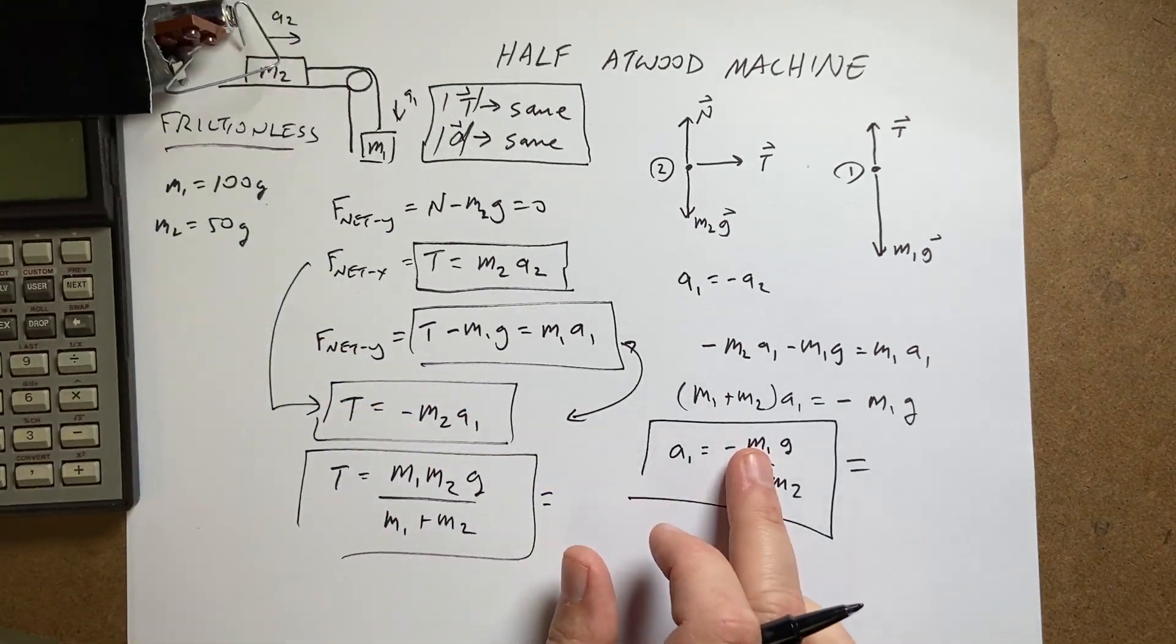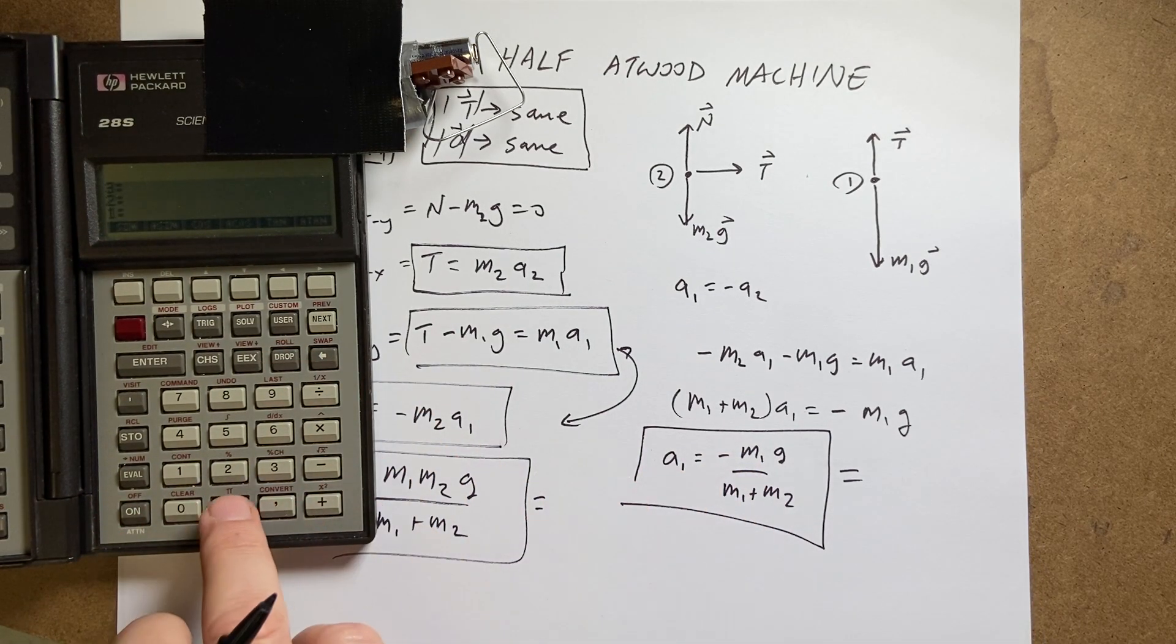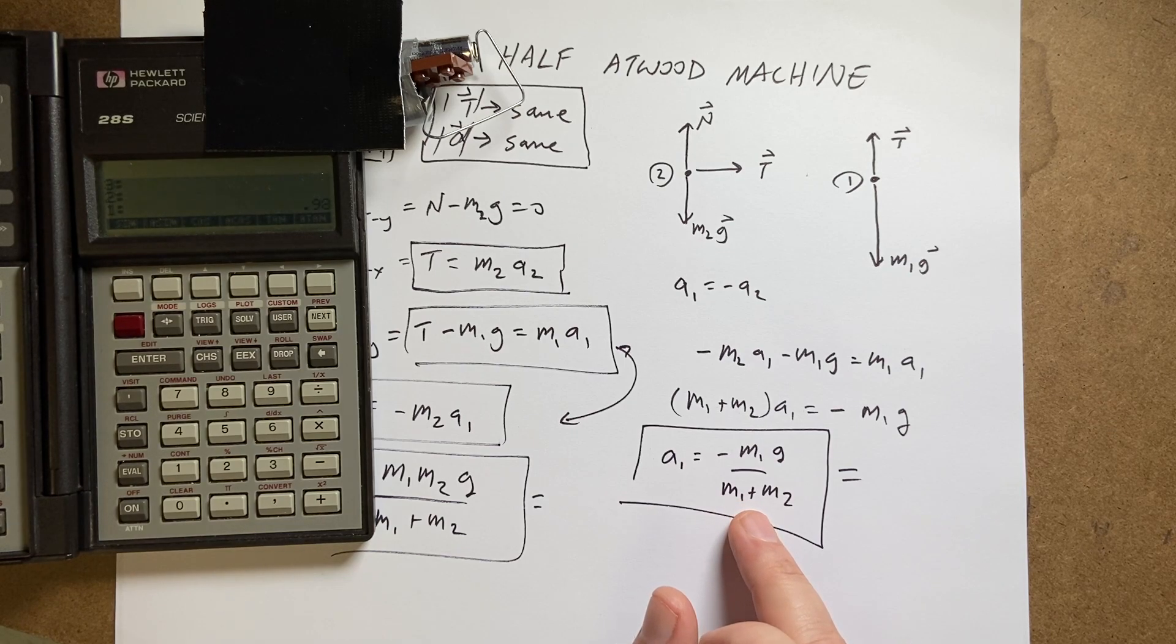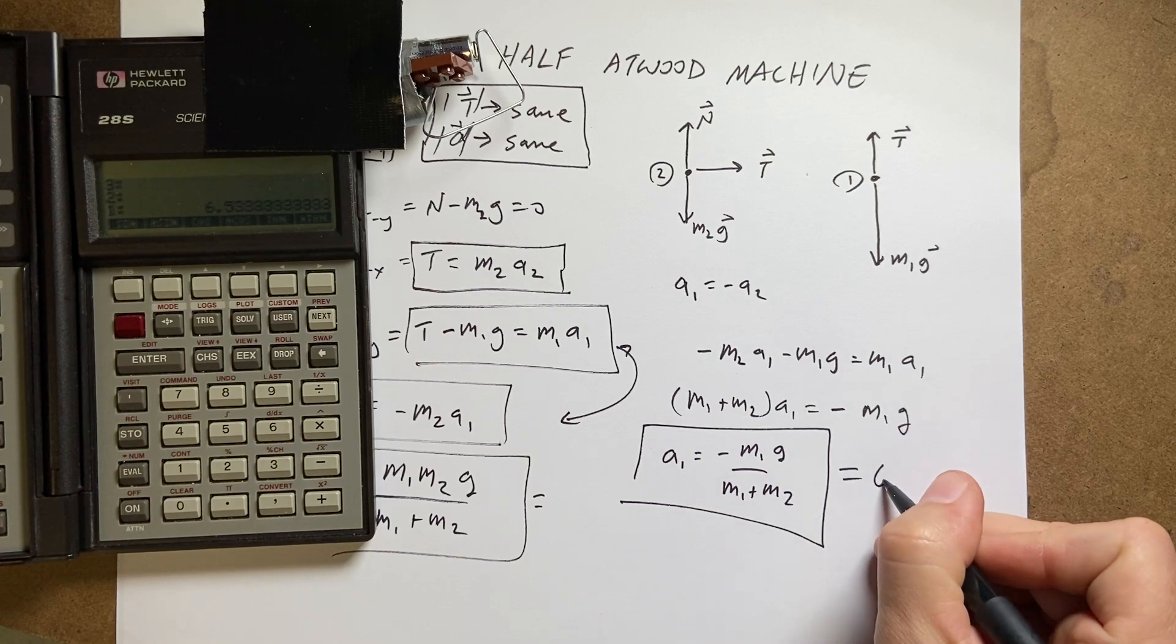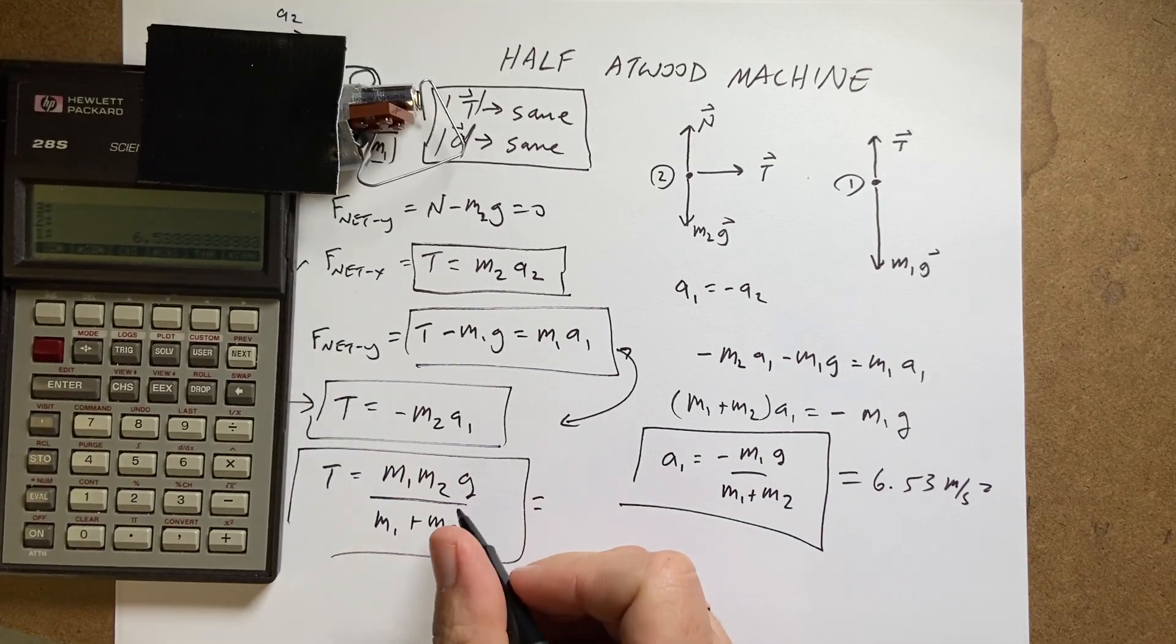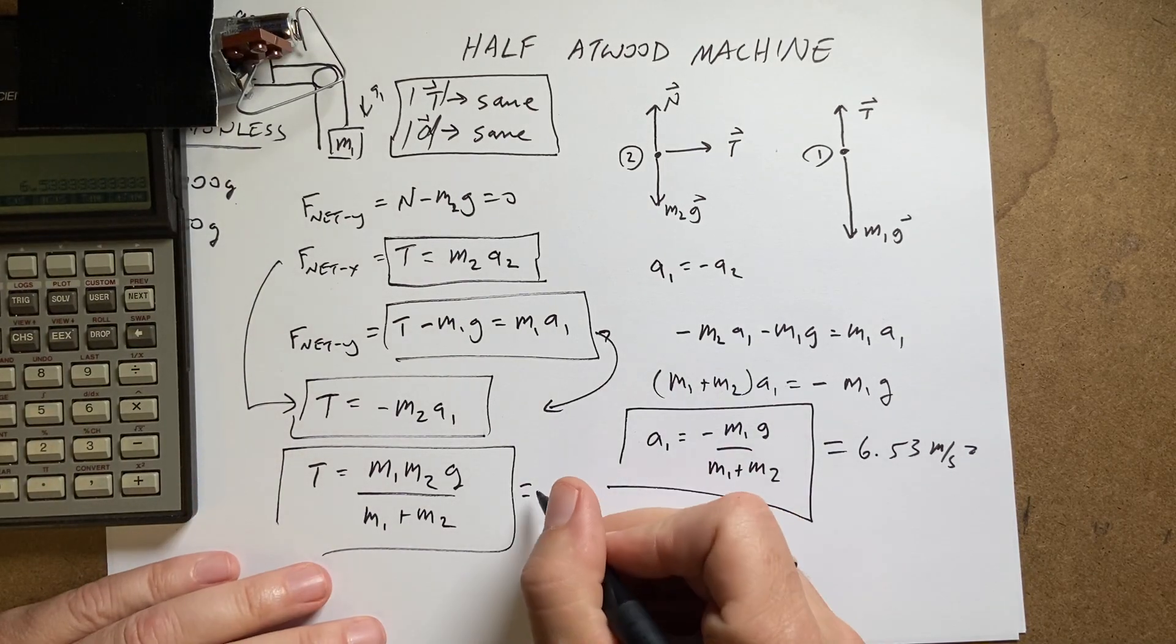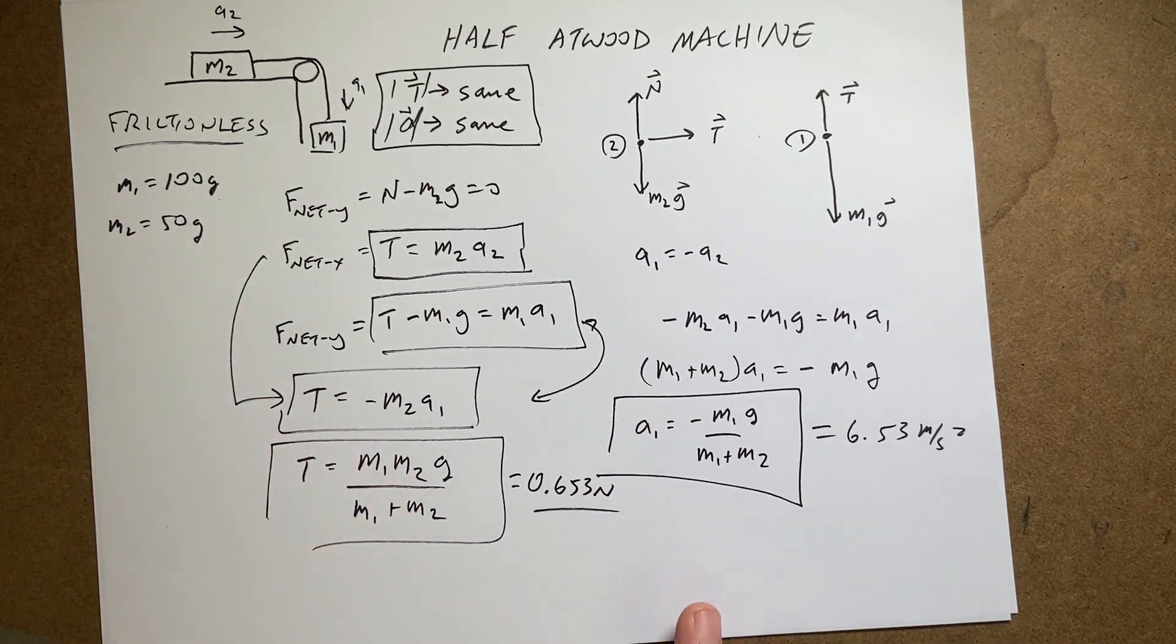So m1 is 100. So I'm going to put, I'll leave off the negative sign. So 100 is 0.1 kilograms, enter, 9.8 times. And then I need to divide by the sum of those two, which is going to be 0.15 kilograms. And I get 6.53 meters per second squared. And then over here I can just take that same thing and multiply by m1, which was 0.1. And I get 0.653 newtons. I don't even have to put that in my calculator.